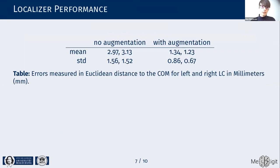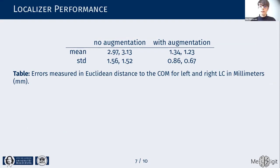When we analyzed the localizer's performance in terms of Euclidean distance to the center of mass, we were initially a bit concerned, having obtained 1.3 millimeters on average for the left and 1.2 millimeters for the right locus ceruleus.